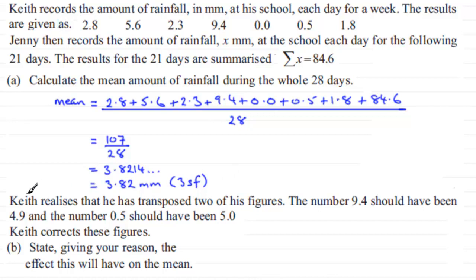All right, now we're told that Keith realizes that he has transposed two of his figures. The number 9.4 should have been 4.9 and the number 0.5 should have been 5. And we've got to state, giving a reason, the effect that this will have on the mean.